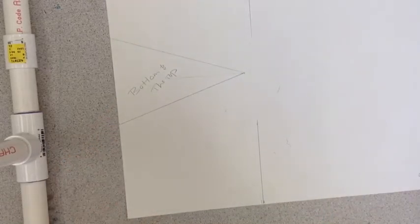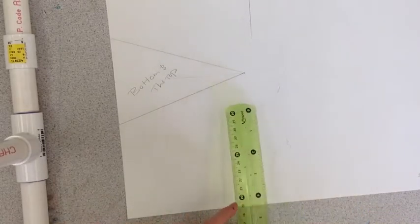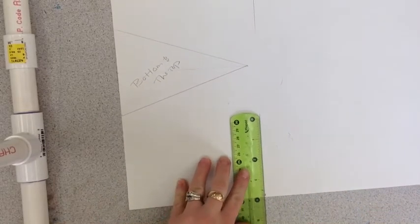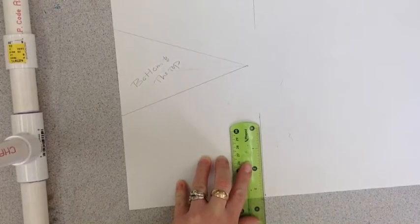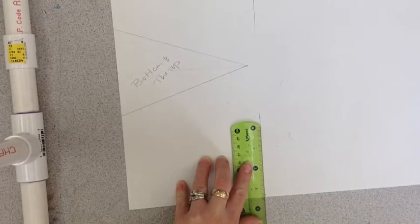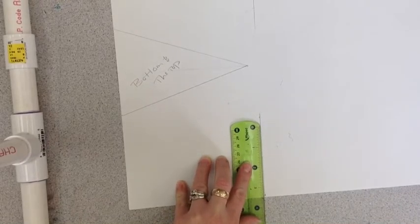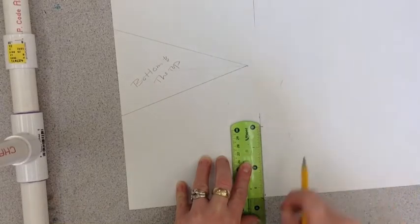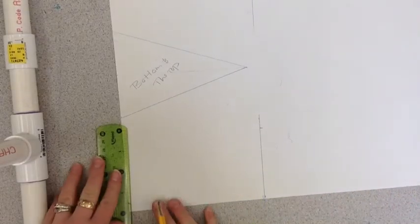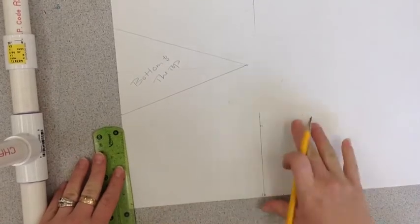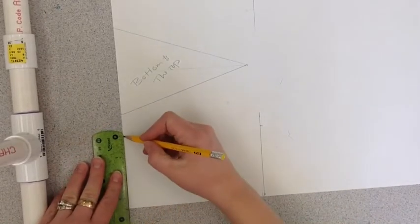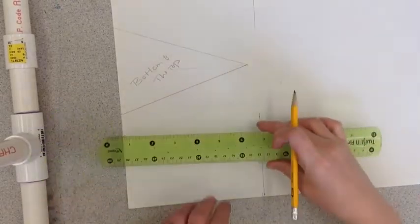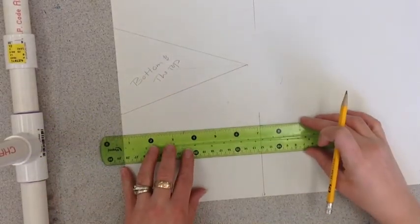So now you have to decide how tall is this going to be. Maybe you have a big piece of cake. Maybe you're going to make yours four inches high. I am not. I'm going to go at three and a half inches. So I find my three and a half. Mark here. Find my three and a half. Mark there. Connect.